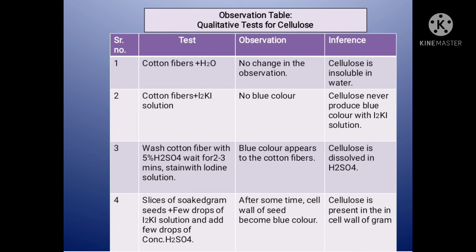Qualitative test for cellulose. First test: cotton fiber plus water — no change in observation; cellulose is insoluble in water. Second test: cotton fibers plus I2K solution — no blue color; cellulose does not produce a blue color with I2K solution alone.